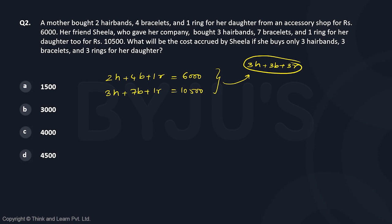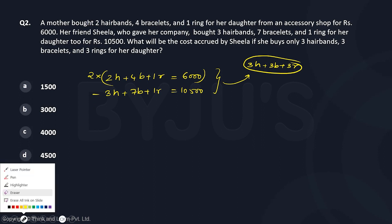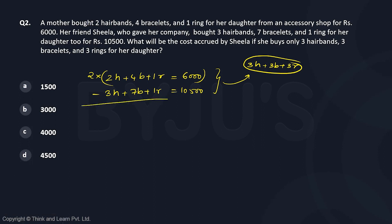Let's take a little trial and see if we can do this. If you multiply the first equation by two and then subtract the second, you get: four h minus three h is h, eight b minus seven b is b, and two r minus r is r.